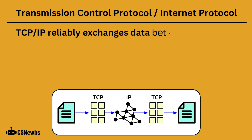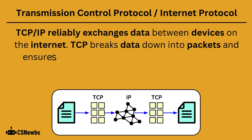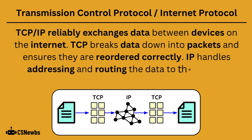TCP/IP reliably exchanges data between devices on the internet. TCP breaks data down into packets and ensures they are reordered correctly. IP handles addressing and routing the data to the correct destination.